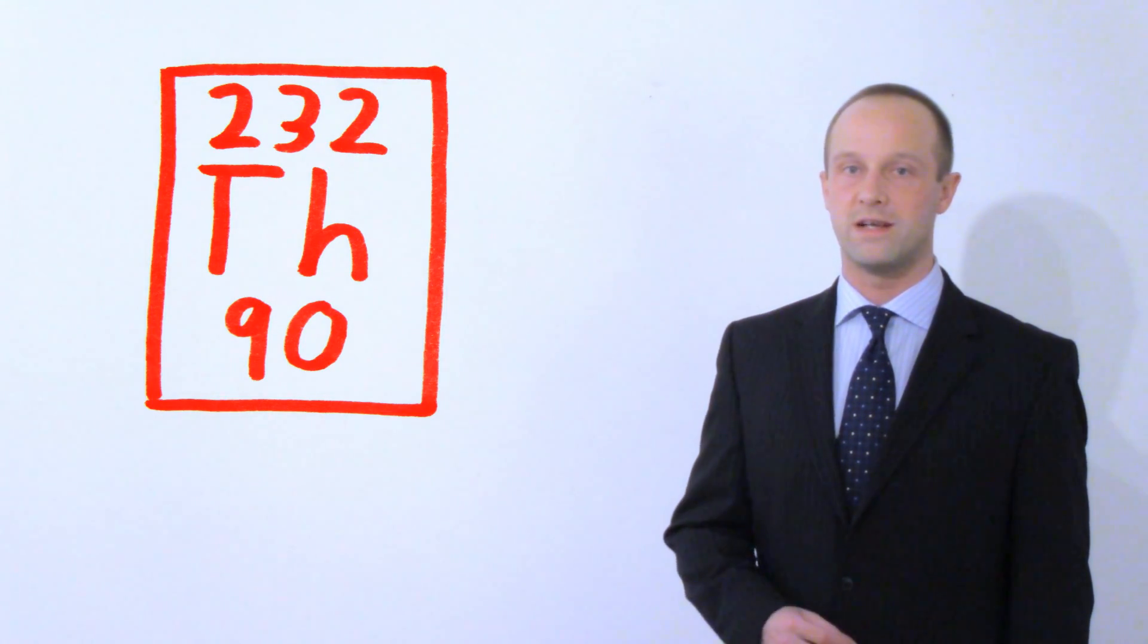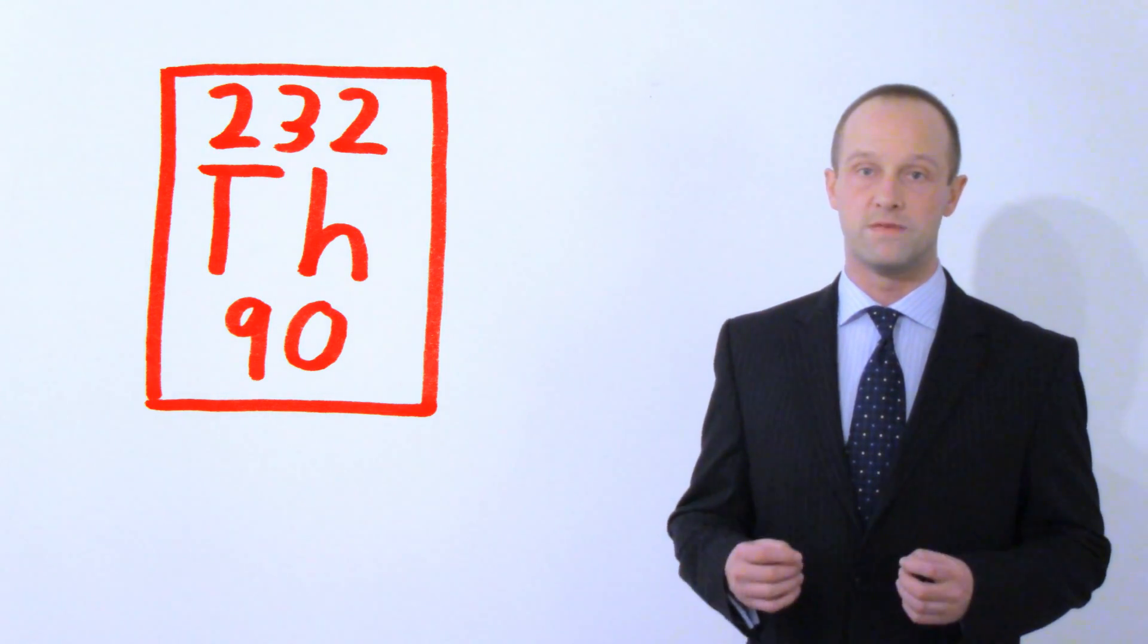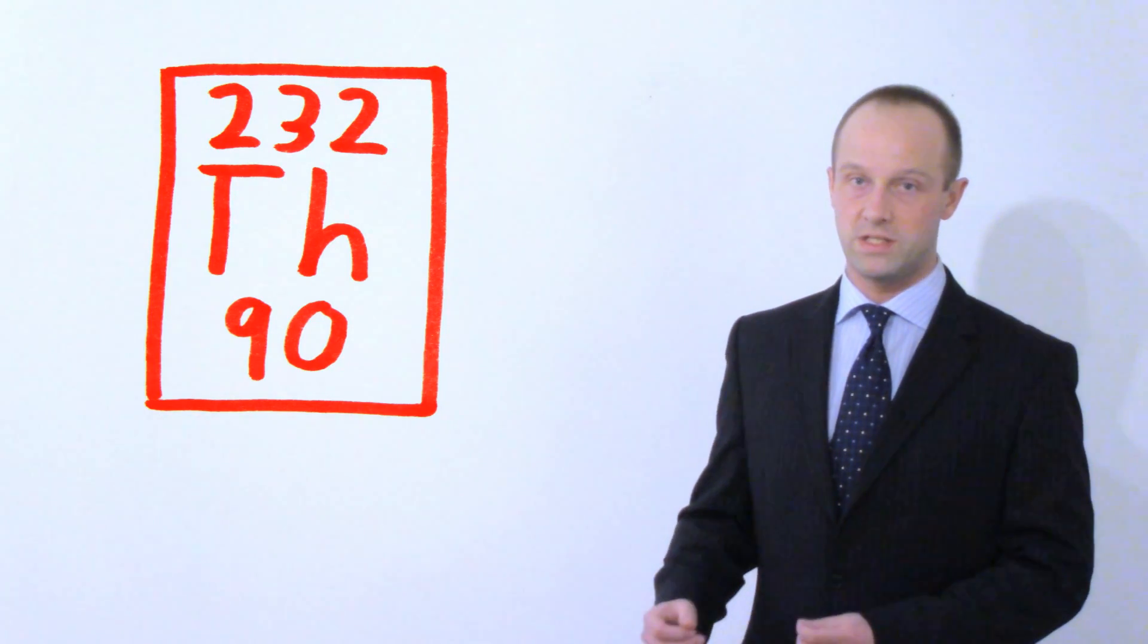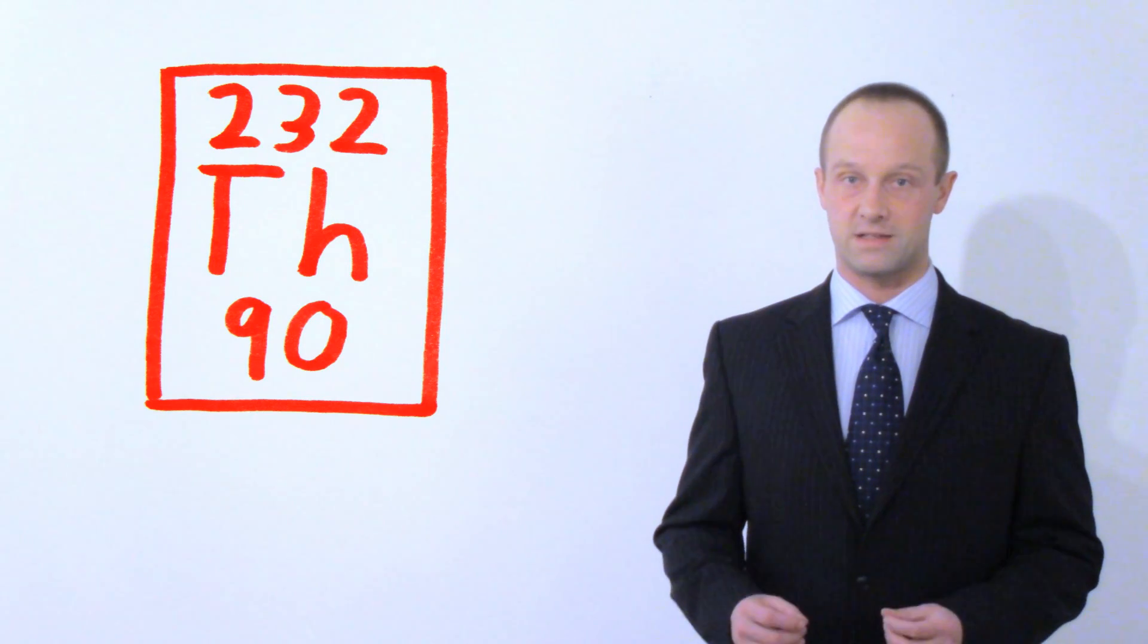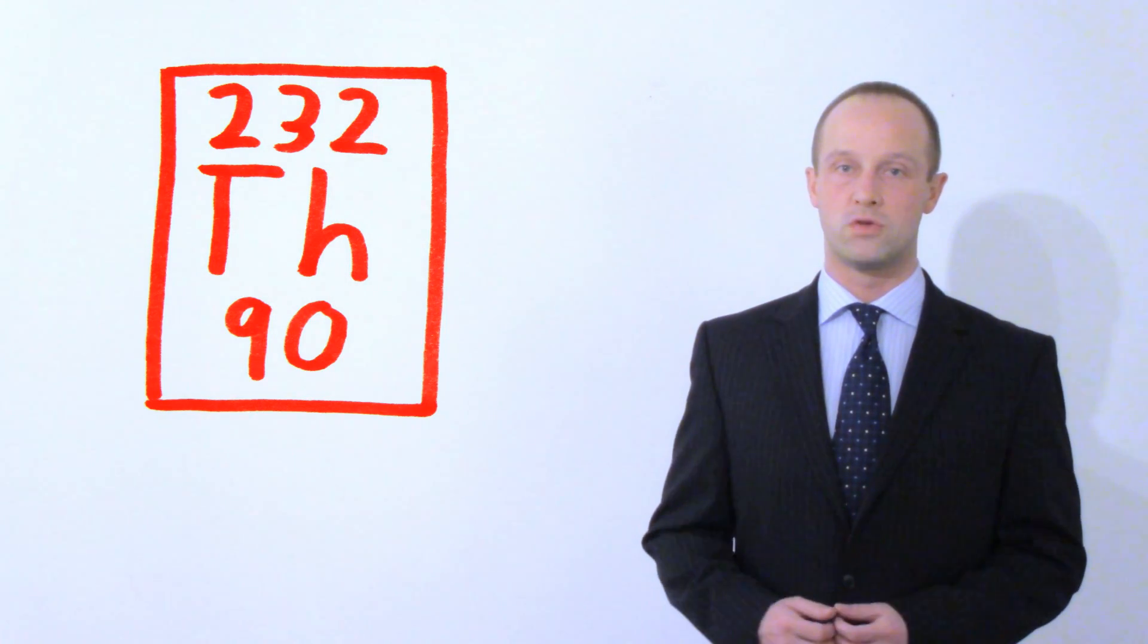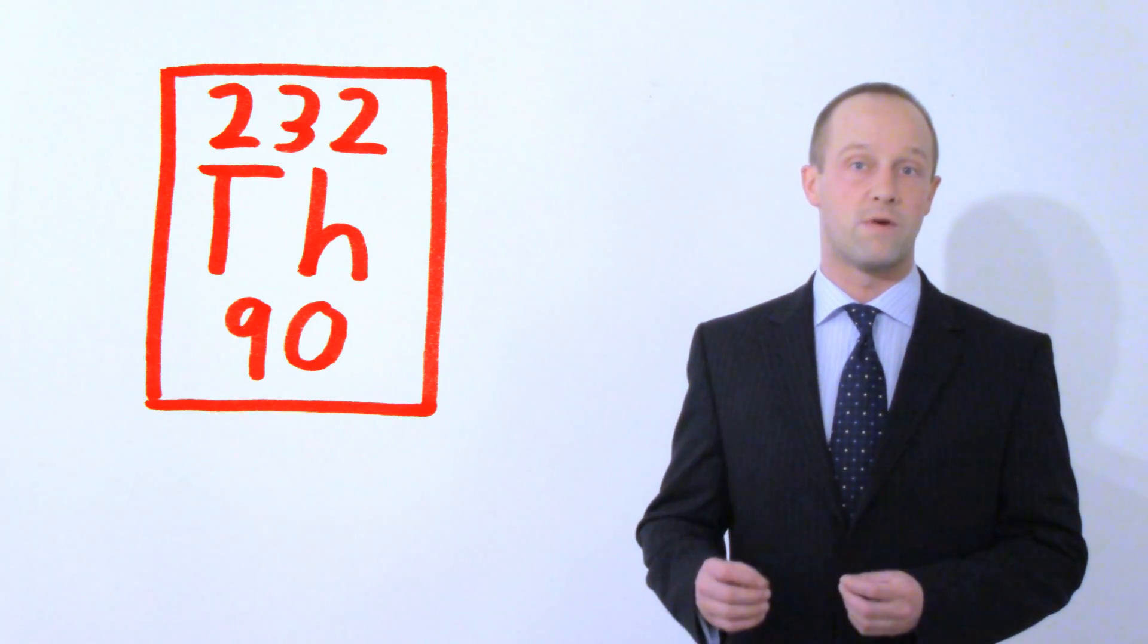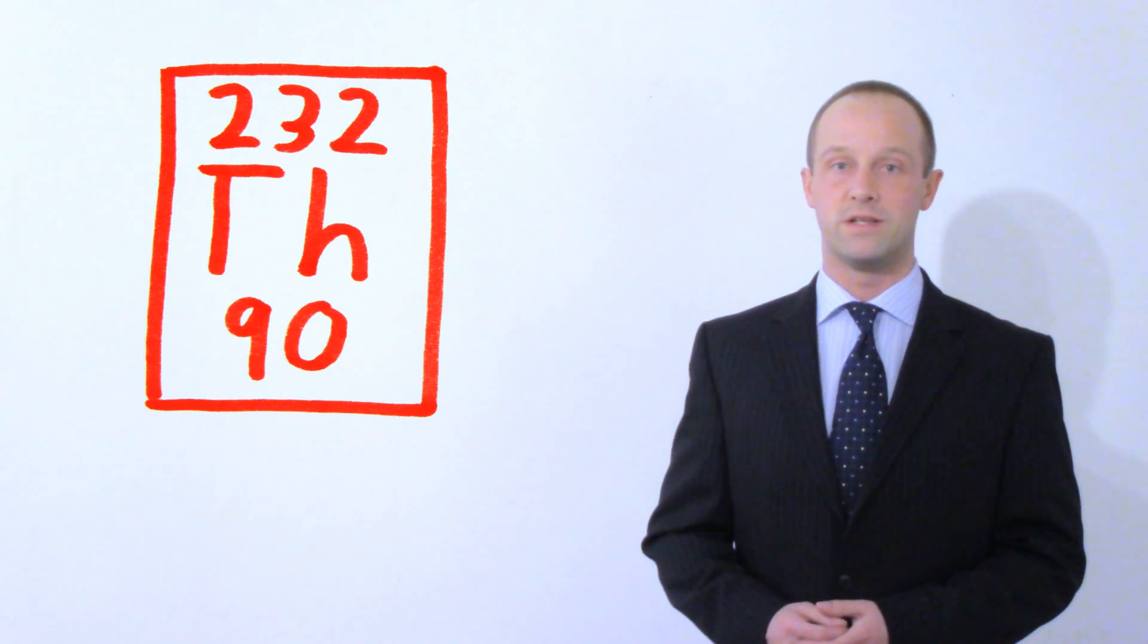So there are 90 protons in this element and it's got a mass number of 232, which means that there's 142 neutrons in an atom of thorium. Remember, to work out the number of neutrons, you just do the mass number and then subtract the proton number from that number. So 232, take away 90, gives you 142.